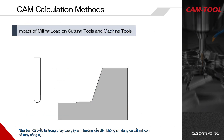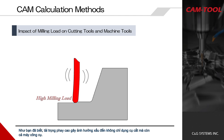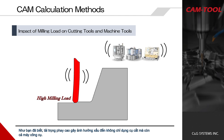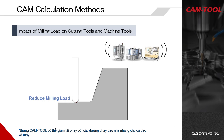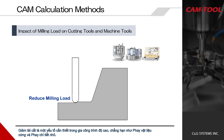A high milling load gives a bad impact on not only the cutting tool but also the machine tool. CamTool can reduce milling load with toolpaths that are gentle to both the tool and the machine. Reducing cutting load is an essential element in high-level machining such as hard milling and micro milling.